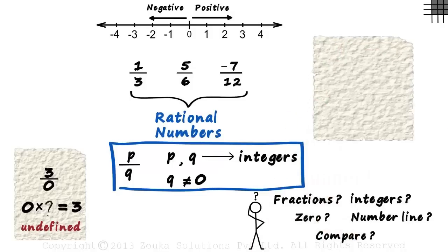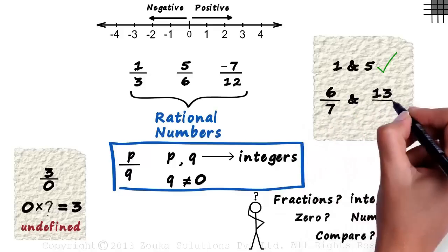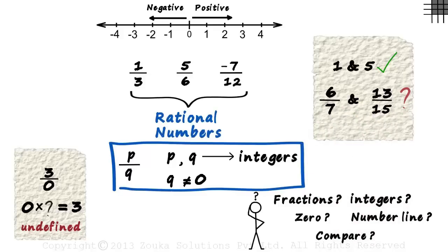For example, if you are asked to compare 1 and 5, you could easily say that 5 is greater of the 2. But what if you are asked to compare numbers like 6 by 7 and 13 by 15? How would you find out which one is greater? Don't worry about it. All these questions will be answered in our videos on Rational Numbers.